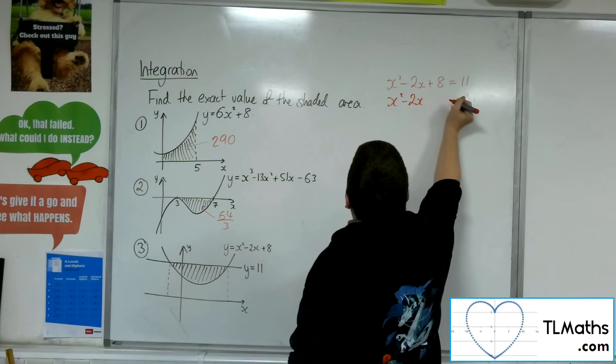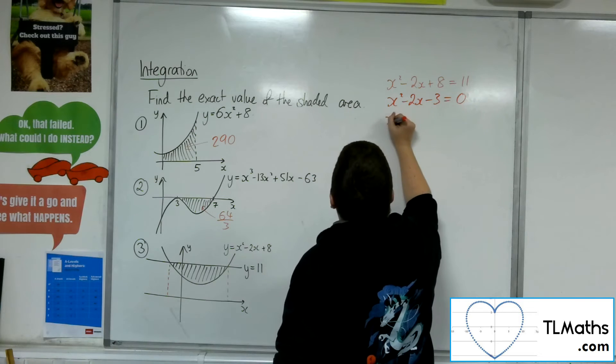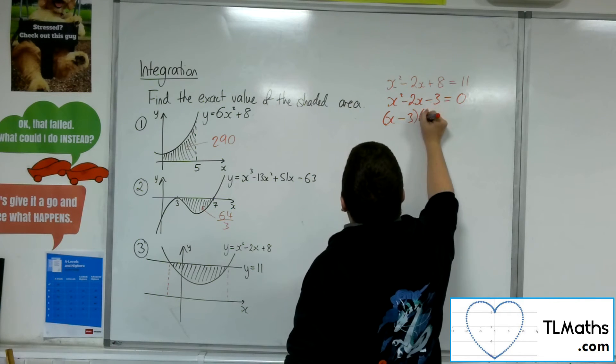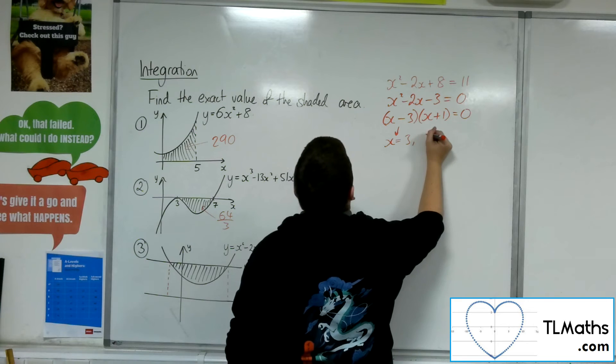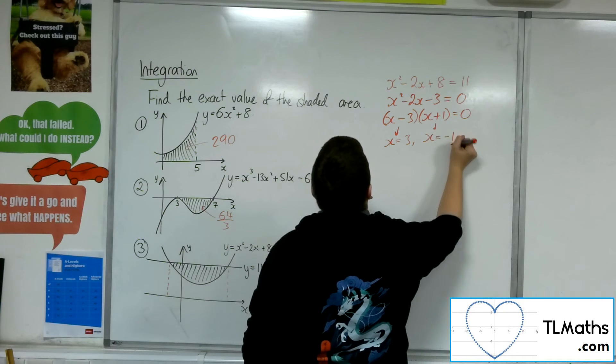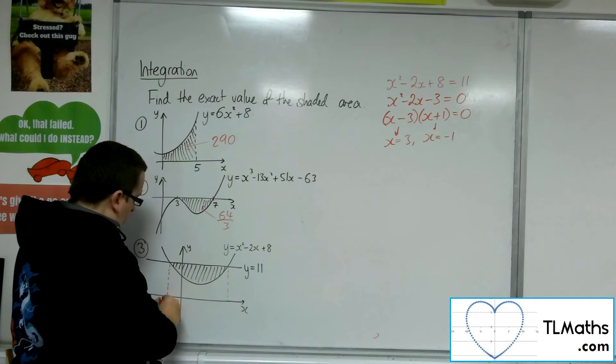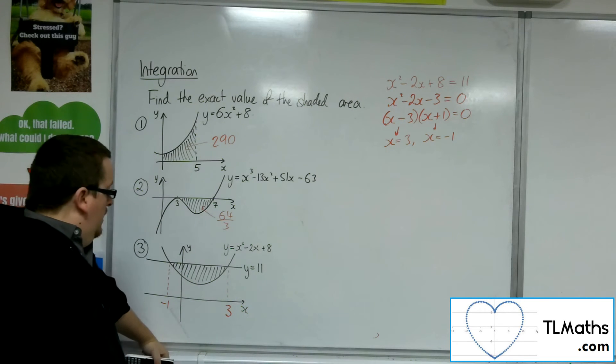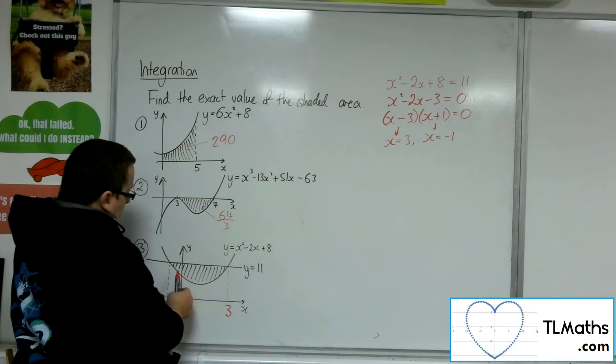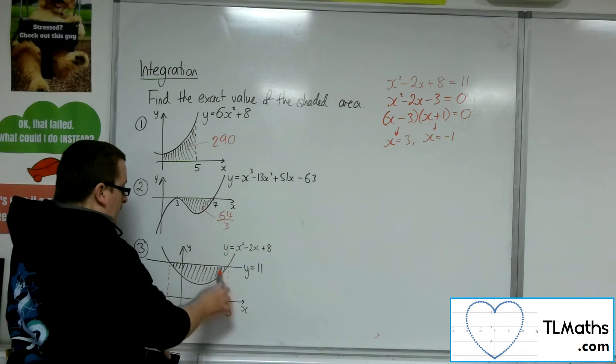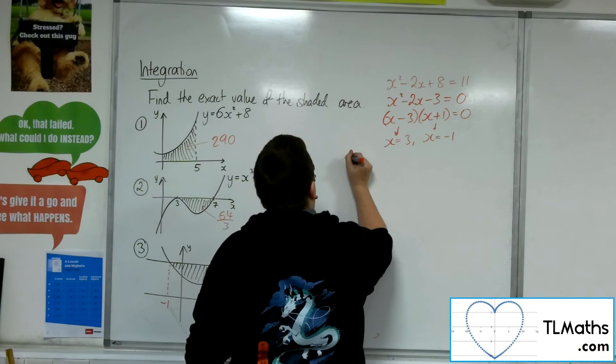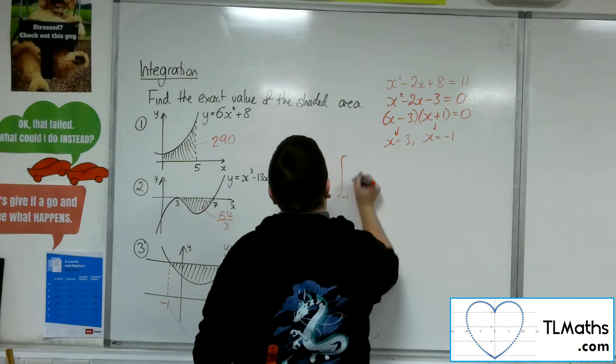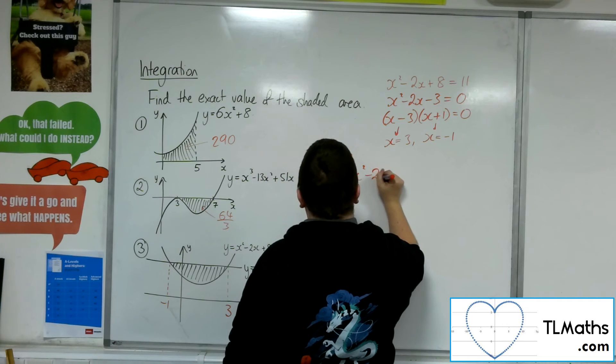So, I'm going to subtract the 11 from both sides. This gives me a quadratic that I can factorise. So, I can read off from that that either the x is 3 or the x is minus 1. So, this point must be minus 1. That point must be 3. So, my target now is that if I work out the area of that rectangle, I can subtract the area between the curve and the x-axis, and that's found through integration. So, integrating between minus 1 and 3, the x squared minus 2x plus 8.